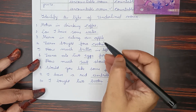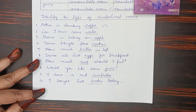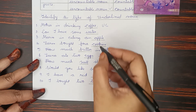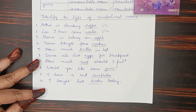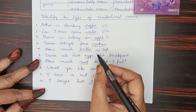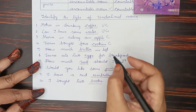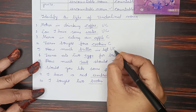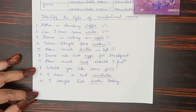Mother is drinking coffee — coffee is an uncountable noun. Can I have some water? — uncountable noun. Maria is eating an apple — apples are countable. Tarun brought four cookies — cookies are countable. How much butter is left? — butter is uncountable. The remaining questions, six through ten, do it as an activity.